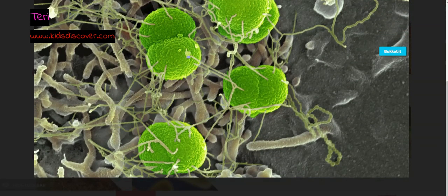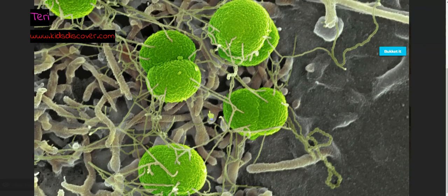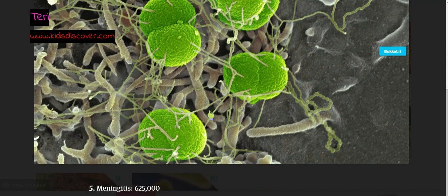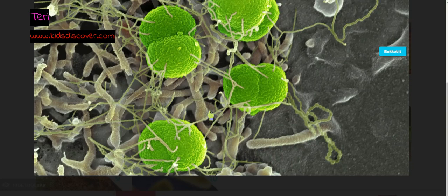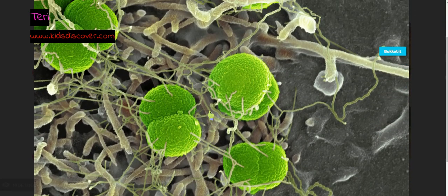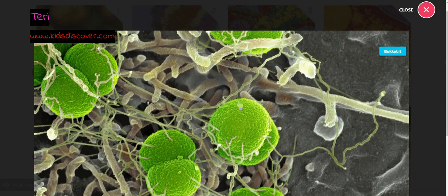This green looking virus is called meningitis, and it can actually get into the brain and infect the brain. It has killed almost a million people, 625,000 people. There is a viral meningitis and a bacterial meningitis.